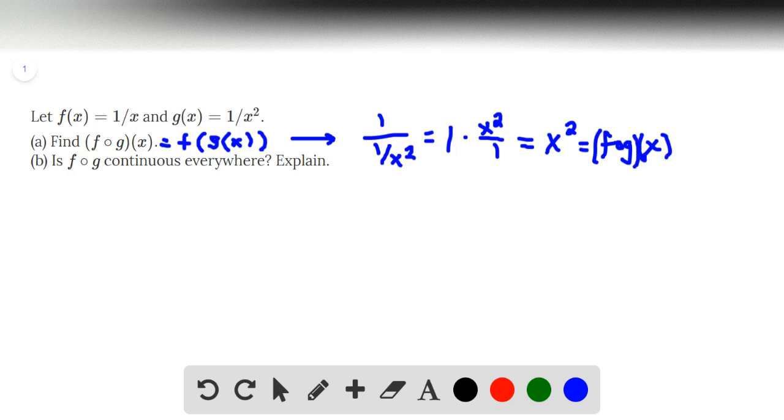Part B is f of g continuous everywhere. Explain. Now, if we take a look at f of g, the function is x squared. It's a polynomial. And we're tempted to say that the function is continuous everywhere for that reason. However,